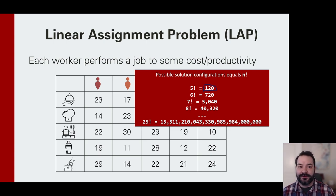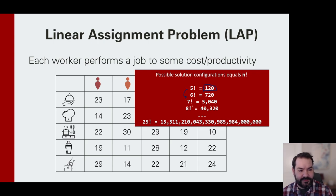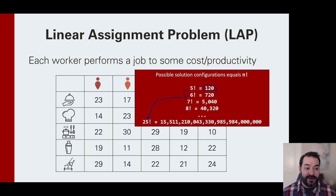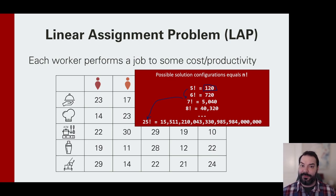That's not hard — you can build an algorithm to solve it within a second. But the problem is what happens as we increase how many people and tasks we have. How many configurations do we have to deal with when N gets to, like, 25? It gets into a giant number, and we can't brute force this anymore — that's going to take millennia.